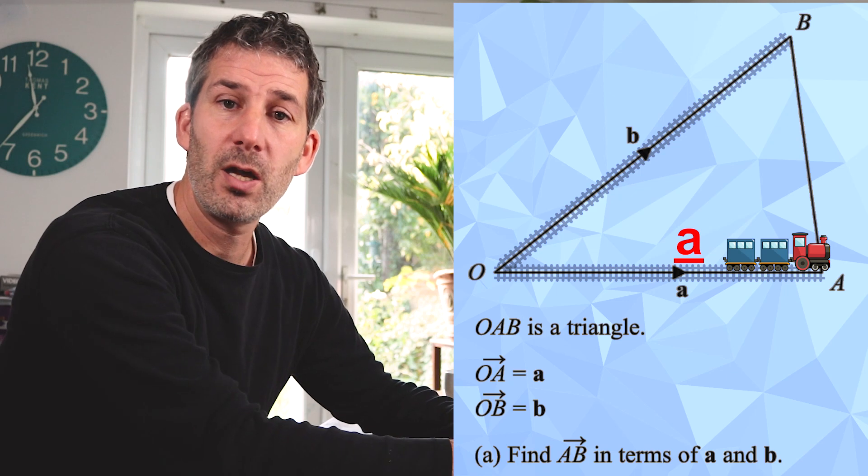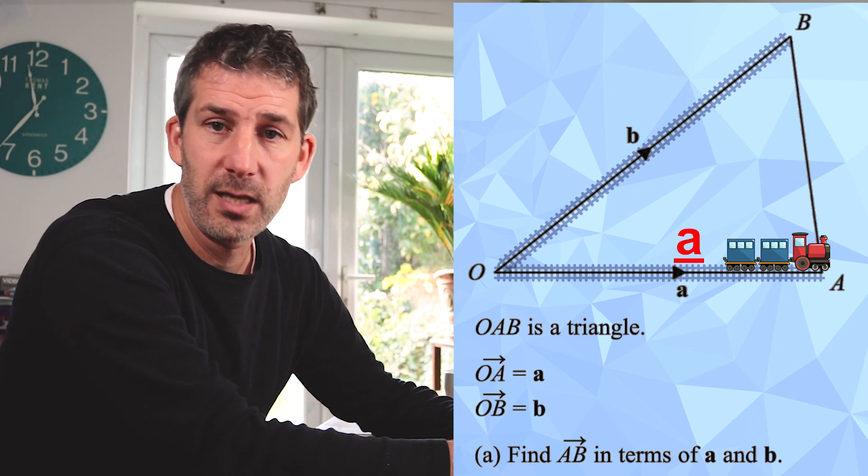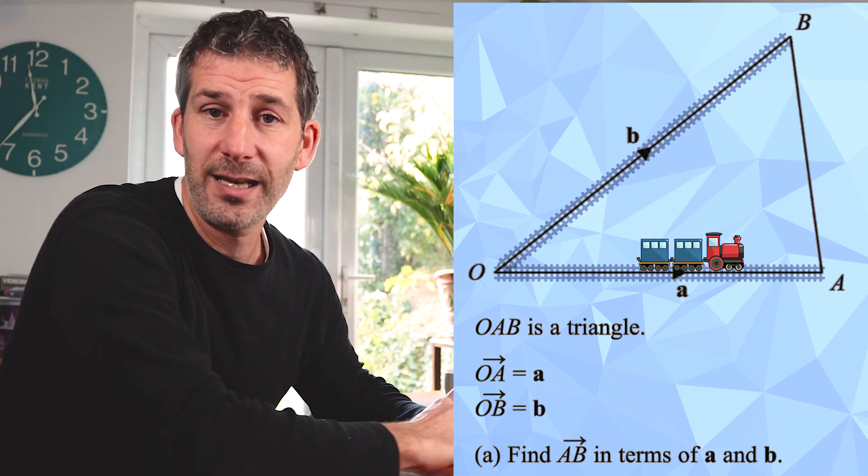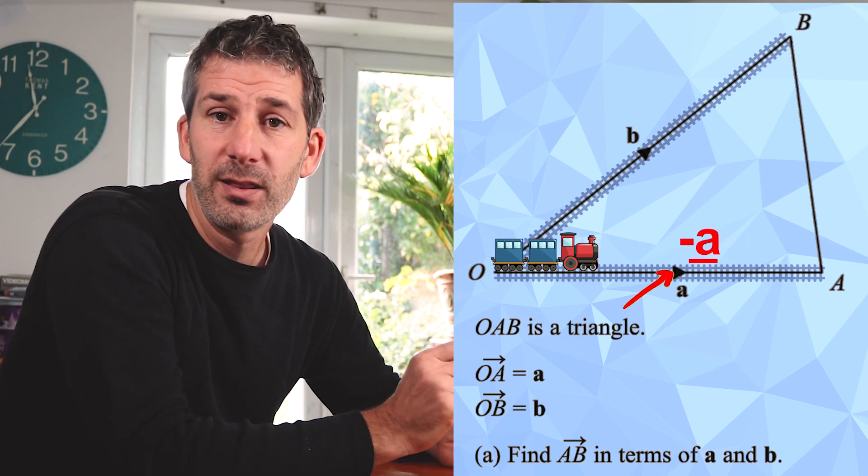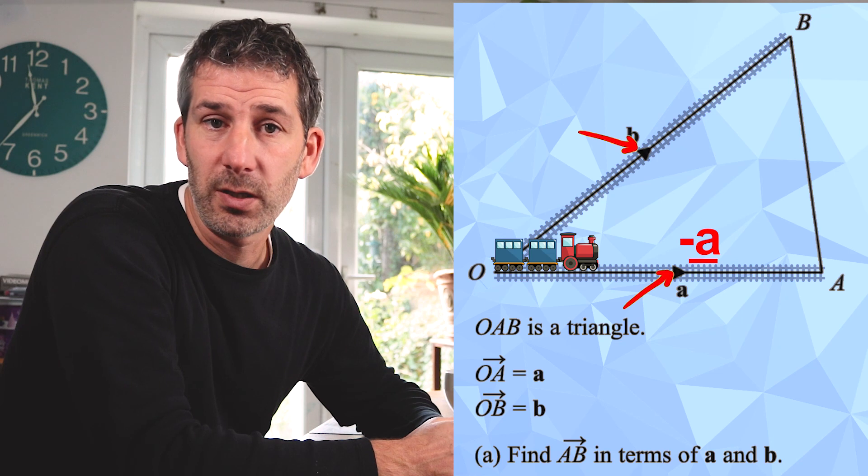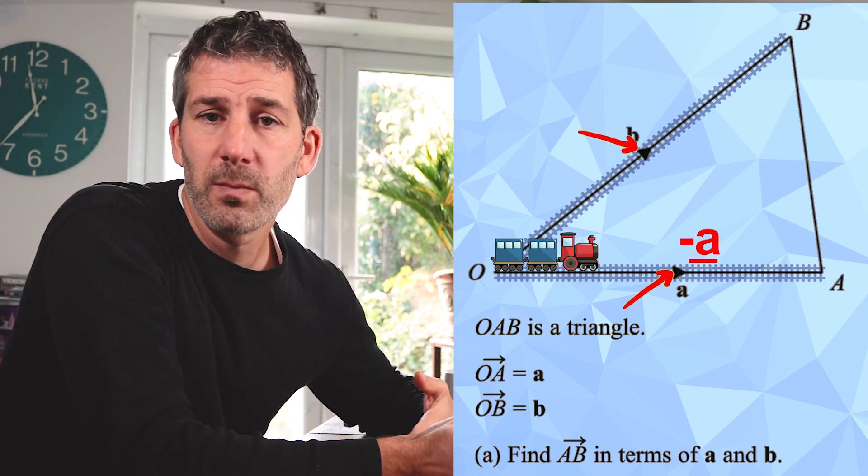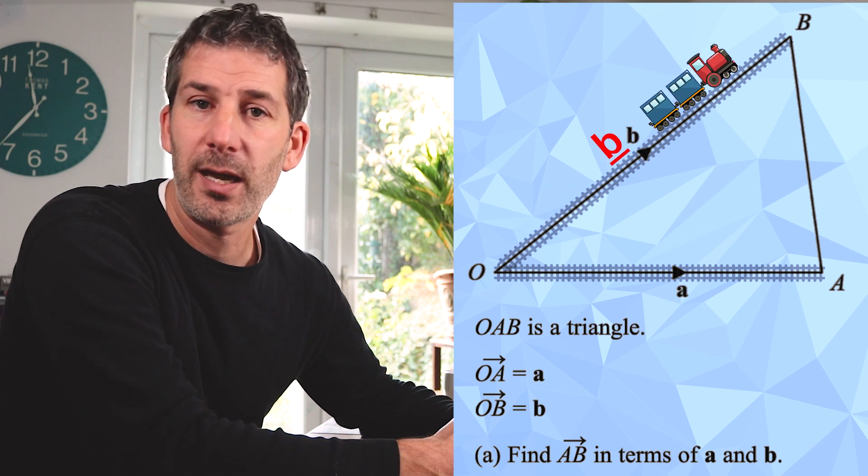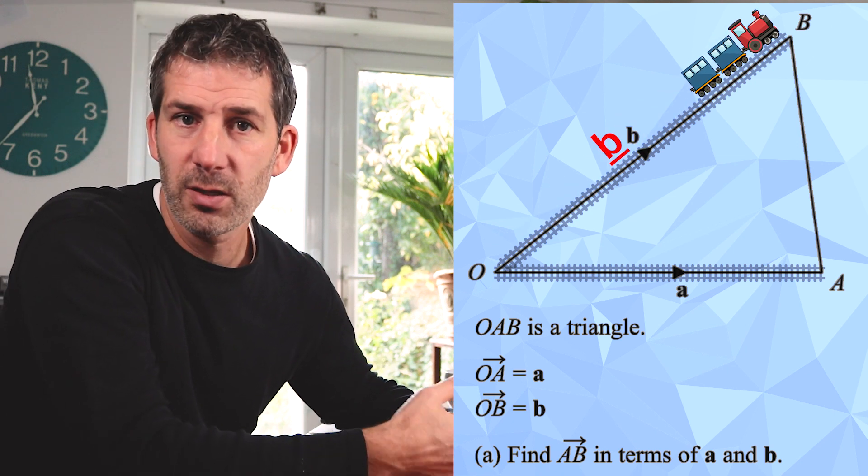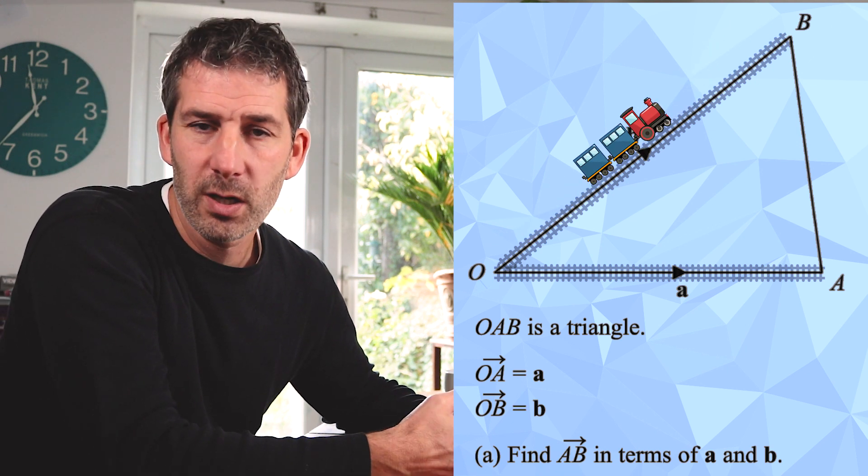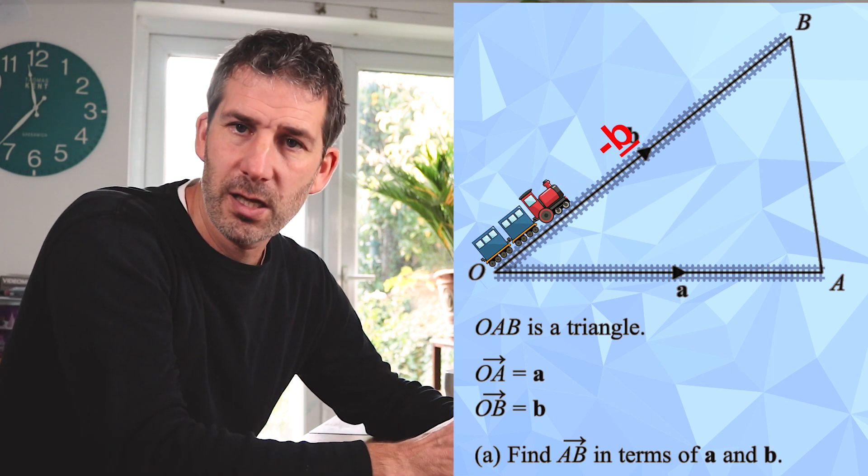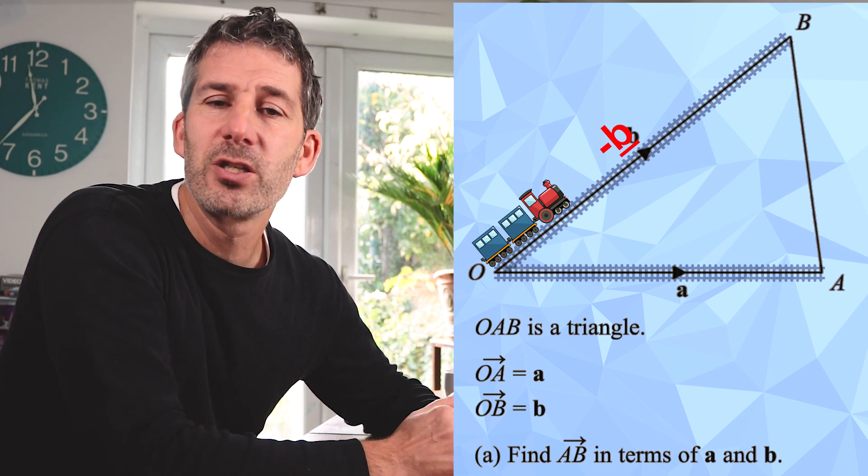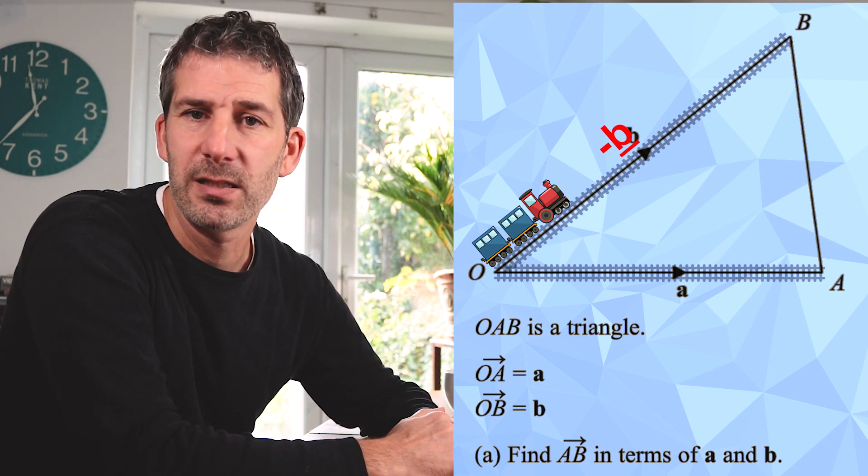And if we want to go in the opposite direction from A to O, we call that journey negative a. And that little arrow you can see, that lets you know the direction of the journey. The journey from O to B then is called vector b, and to come back in the opposite direction to the way the arrow is pointing, in other words, from B to O, we would call that vector negative b. So to come back in the opposite direction, you just make the letter negative.